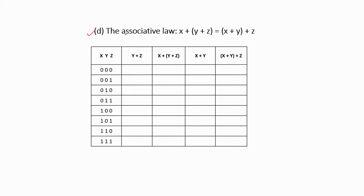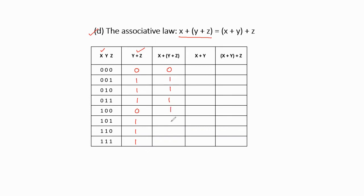The next identity is the associative law: x + (y+z) = (x+y) + z. To verify, we write the first column as before. From the LHS, first perform the parenthesis part y+z: focus on y and z; if any input is 1 the output is 1; if both are 0, output is 0. Then OR this y+z with x, focusing on x and y+z terms, giving: 0,1,1,1,1,1,1,1.